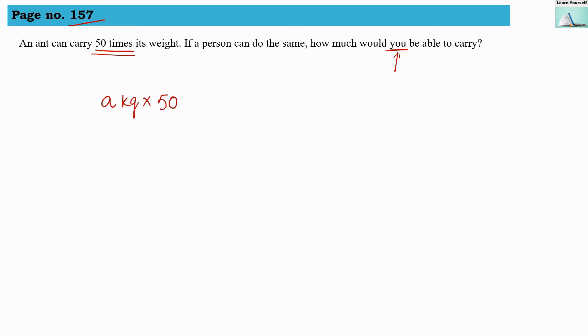Times is always suggesting us multiplication. So a kg is your own weight into 50, and you will get your answer that this much kg weight you will be able to carry if you could carry the same as an ant can carry.